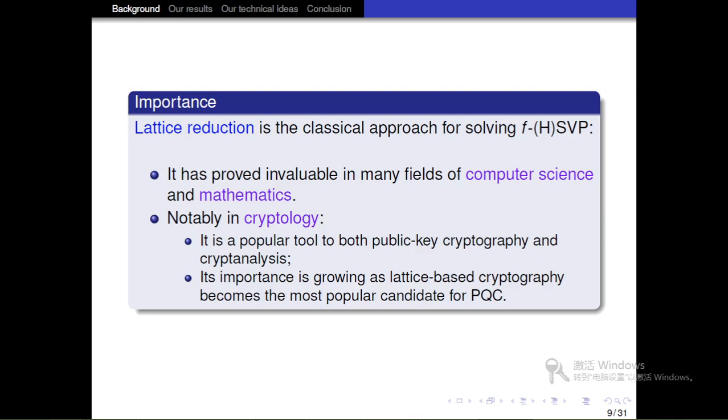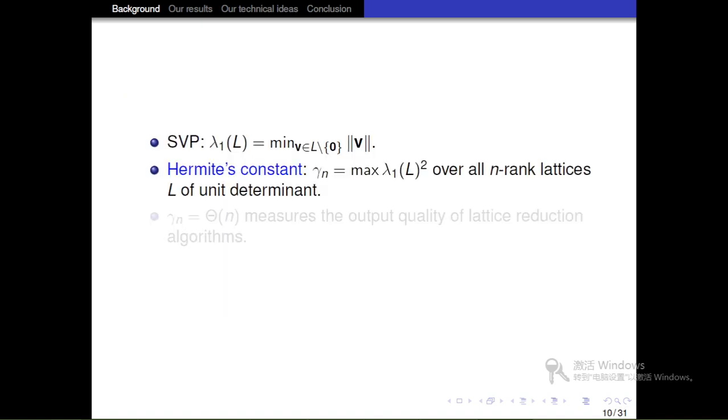Lattice reduction is very important because it is a classic approach for solving γ-SVP and γ-HSVP. It has proven invaluable in many fields of computer science and mathematics. Notably, in cryptanalysis, it is a popular tool for both public key cryptography and cryptanalysis. Its importance is growing because lattice-based cryptography becomes the most popular candidate for post-quantum cryptography.